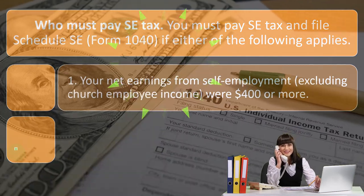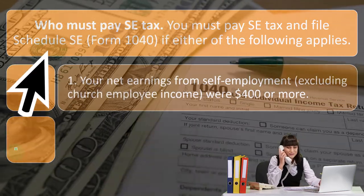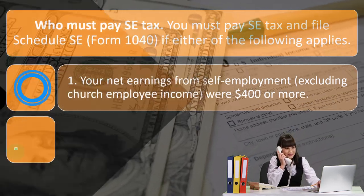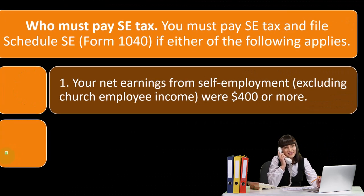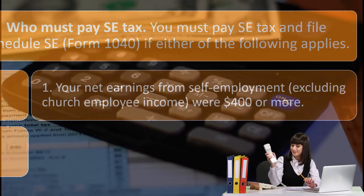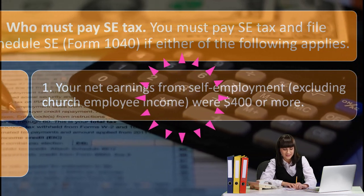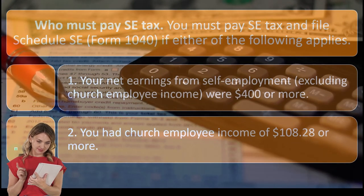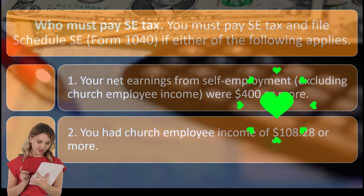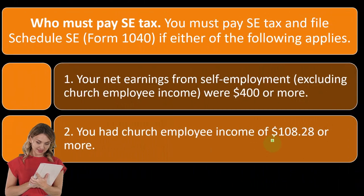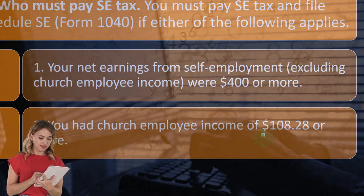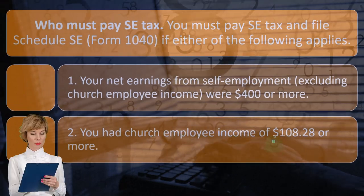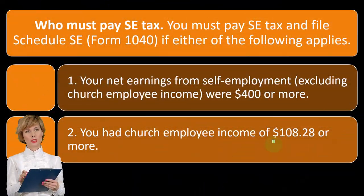Who must pay self-employment tax? You must pay SE tax and file Schedule SE with Form 1040 if either of the following applies: one, your net earnings from self-employment excluding church employee income were $400 or more — a substantially low limit meaning most Schedule C filers will owe SE tax; or two, you had church employee income of $108.28, a number that was never updated with inflation and now just looks oddly specific.